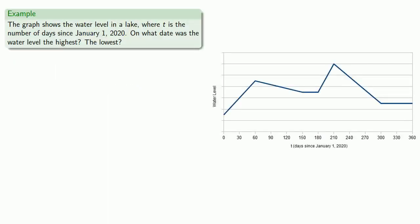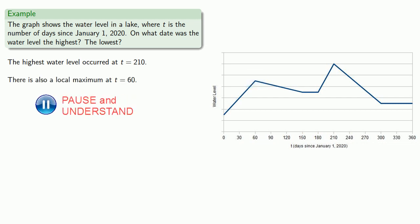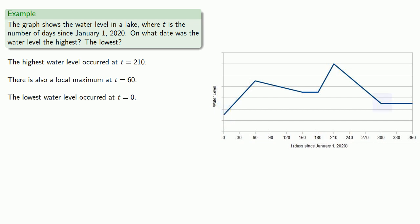Going back to our water level graph, the highest water level occurred at t equals 210 — this is the greatest y value anywhere on the graph, making it a global maximum. At t equals 60, the y value is higher than any points around it; it's a peak in the middle of the graph, so we call it a local maximum. The lowest level occurred at t equals 0, the lowest point anywhere on the graph, giving us a global minimum. So we have a maximum at t equals 210, a local maximum at t equals 60, and a minimum at t equals 0.